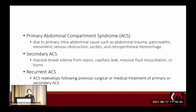There are three types of abdominal compartment syndrome: primary, secondary, and recurrent. Primary is when it starts in the abdomen — a primary intra-abdominal cause — such as trauma, pancreatitis, mesenteric venous obstruction, ascites, small bowel obstruction, or retroperitoneal hemorrhage.